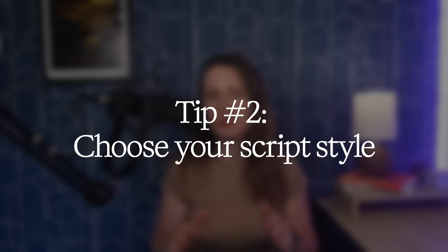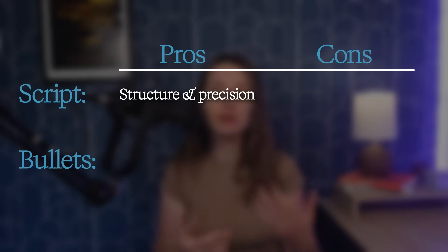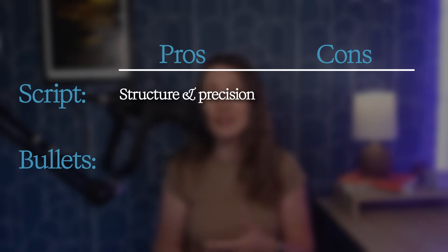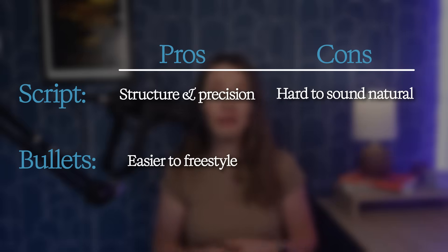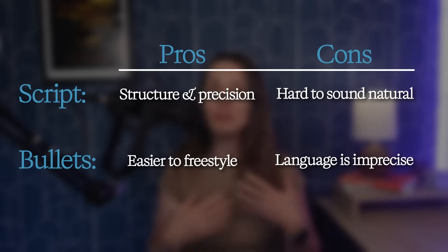Let's talk script style. Do you need a word-for-word script or just loose talking points? Full scripts give you structure and precision, which is great for courses, tutorials, and launches. But it takes practice to sound natural while reading a word-for-word script. Bullet points let you be more spontaneous — good for vlogs, casual intros, or live-style delivery. But they're not the best when you need precise language or when someone else is editing and signing off on your script.